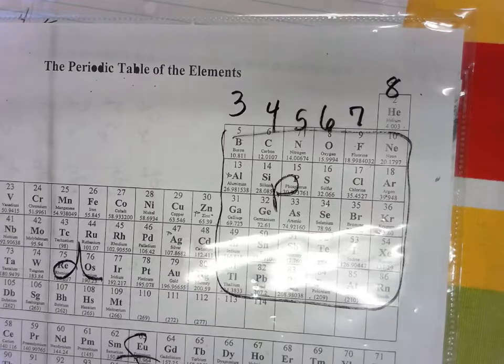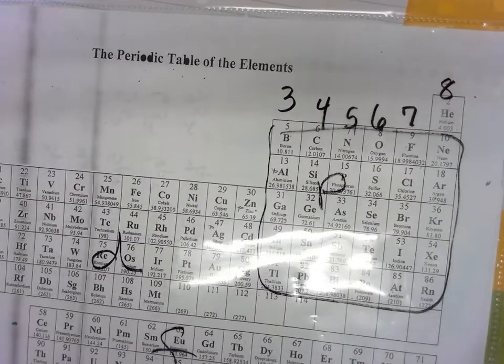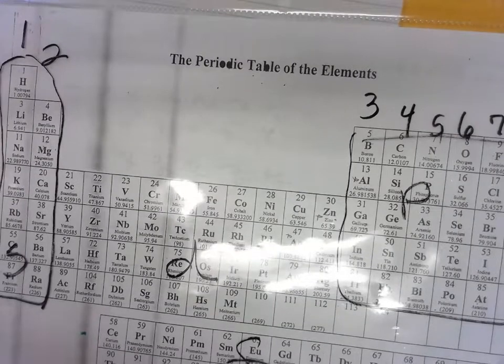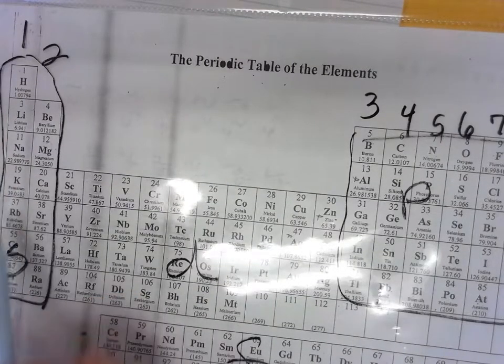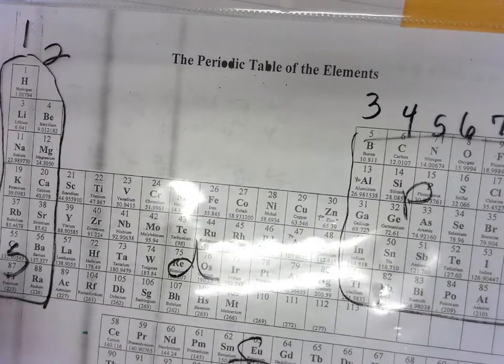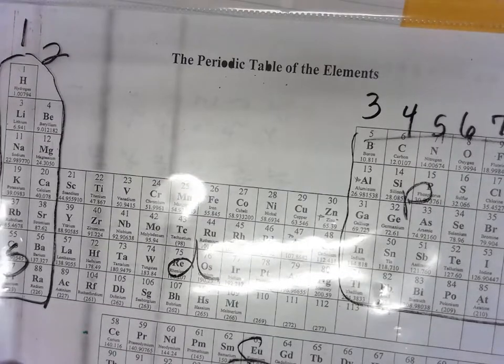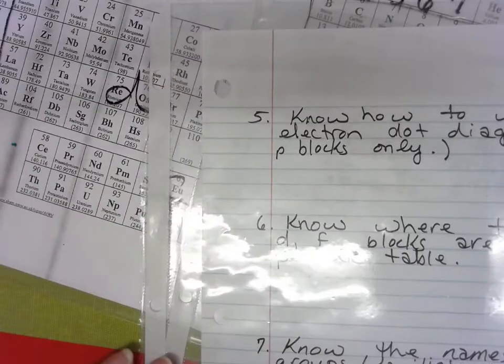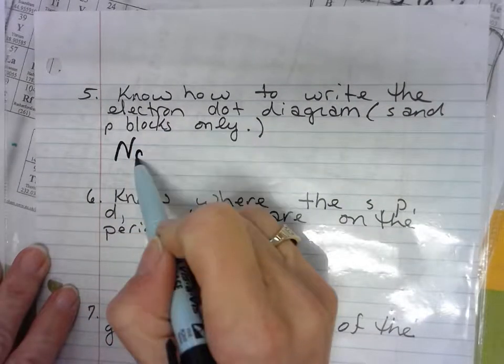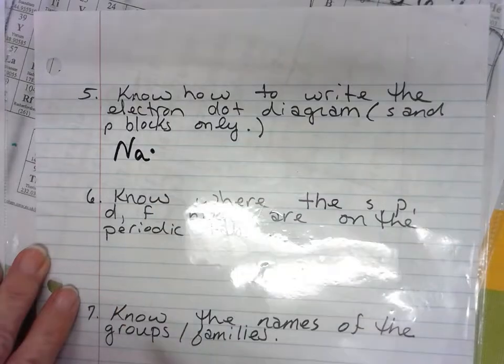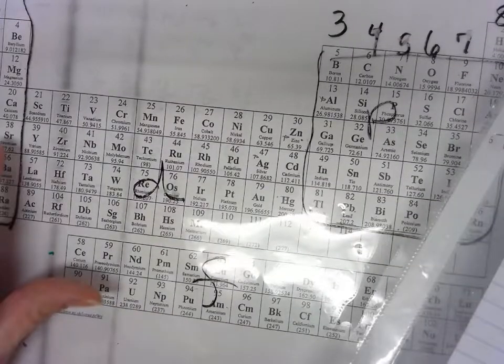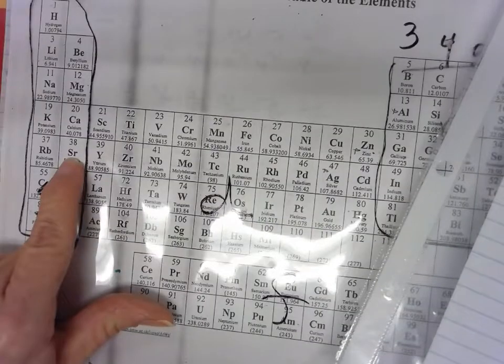Writing the electron dot diagram is very easy. You just have to know how many valence electrons you have. So anything in the first family, we can just use sodium as an example. One dot. If we look at anything in the second family, we can use strontium as an example.